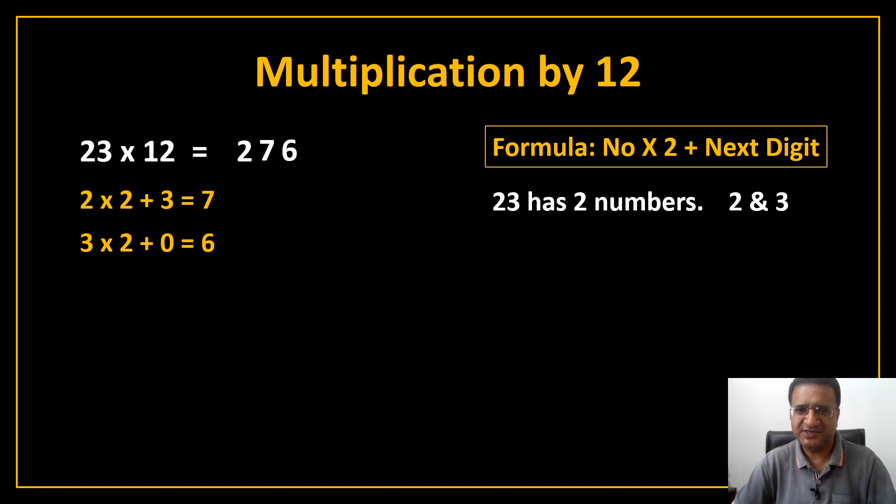Now, let us raise the difficulty level. We will solve one more question. It is 132 x 12. Now, how to solve it? See here, 132 has three numbers. What are those three numbers? 1, 3 and 2. Correct? Okay. Now, write down 1 as it is and then start applying the formula.